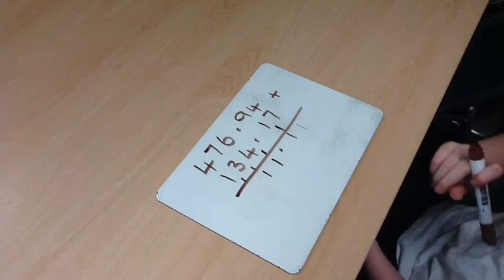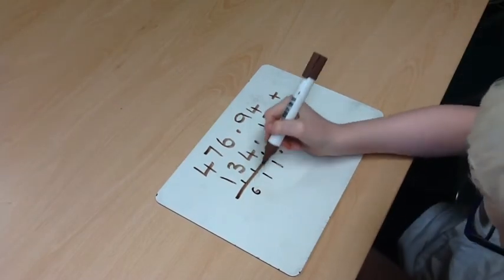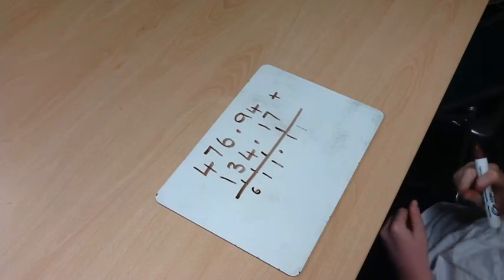4 add 1 is 5. Add the 1 is 6. So the answer is 611.11.